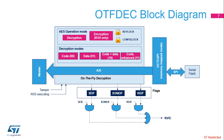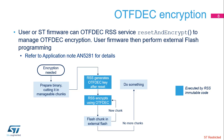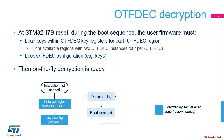Each of these interrupt causes has a dedicated flag and interrupt enable bit. The user firmware is responsible for the following initializations during the boot sequence: loading keys within OTF-DEC key registers for each OTF-DEC region; loading nonce, version, address start, and address end information for each OTF-DEC region; setting REG-EN bits; and locking the OTF-DEC configuration (recommended). After these steps, on-the-fly decryption is ready.